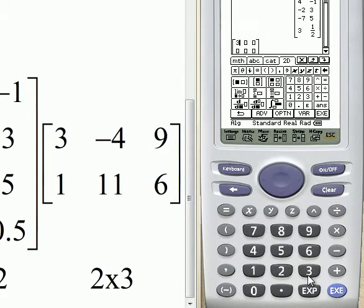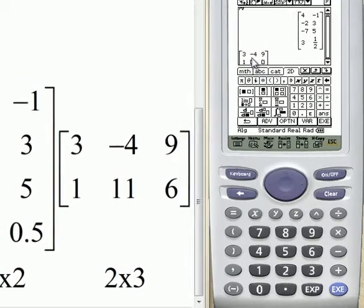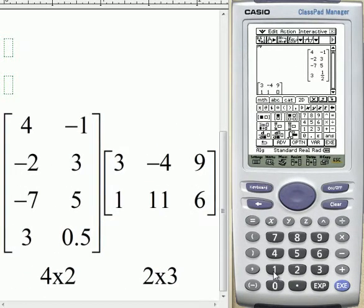So a three, a negative four, a nine, one, eleven, and six. And again, as before, we don't want to stop there. We want to make sure we input this matrix into a variable.